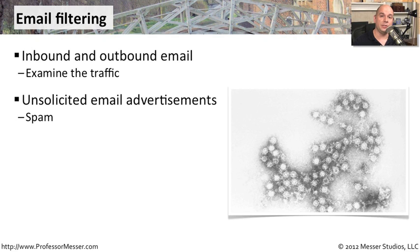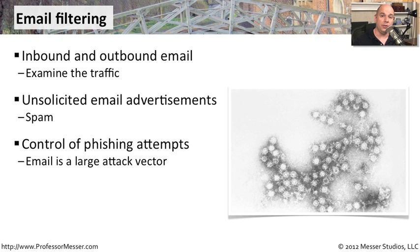Sometimes these are unsolicited messages — spam coming inbound — and occasionally spam might have links inside of those messages or other things inside of the messages you don't want the people inside of your organization to see, so content filtering is used to prevent those from getting inside. Another good example of content filtering is looking for phishing attempts coming in via email.